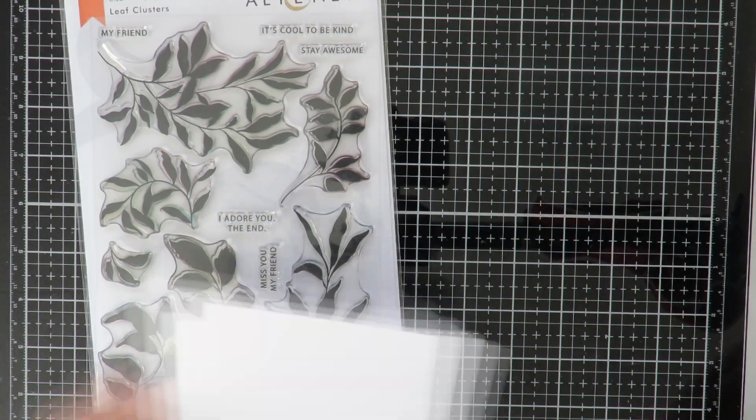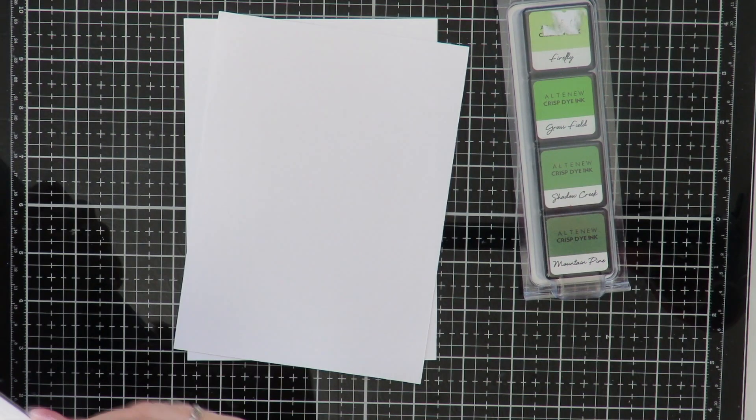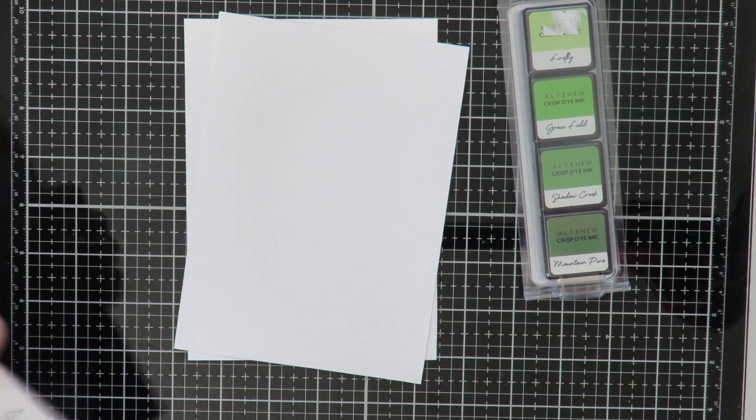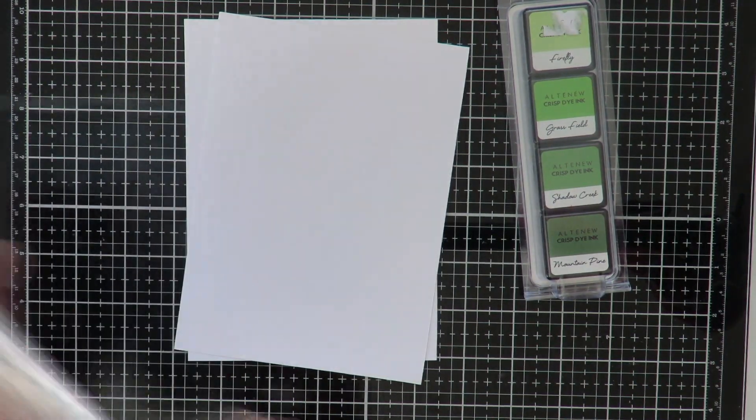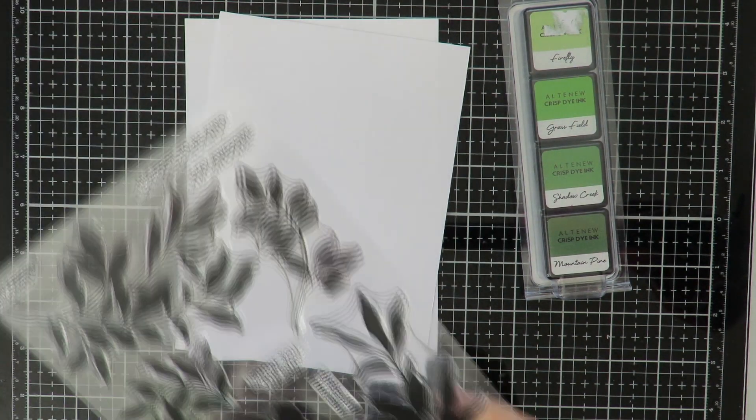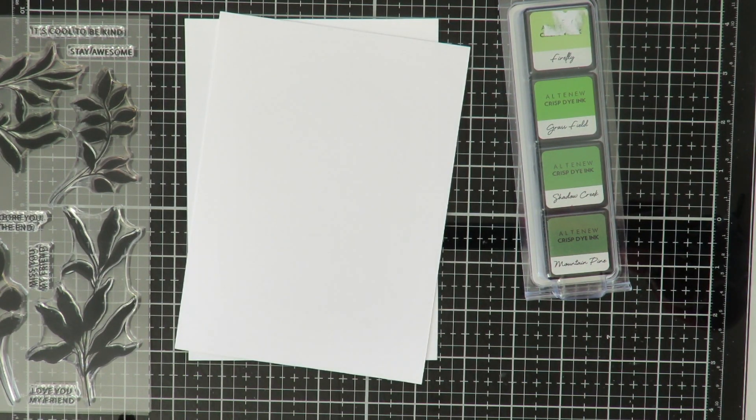Hello, Helen here. Thanks for joining me while I make another card today. Today's card is going to be quite an easy one. I'm going to be using this Altenew stamp called Leaf Clusters. I'm going to be making cards that are 5 inch by 7 inches.